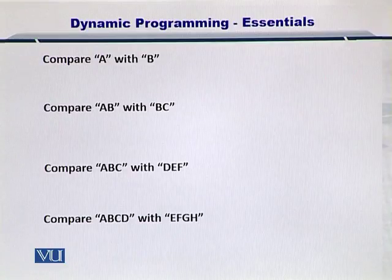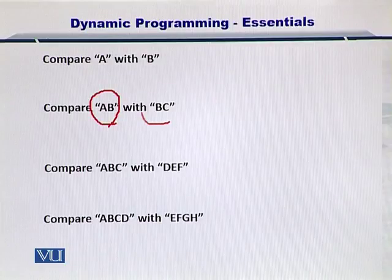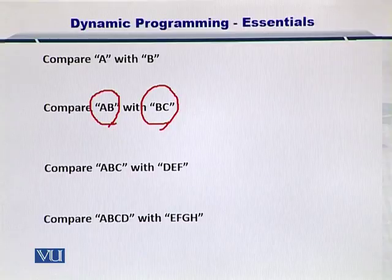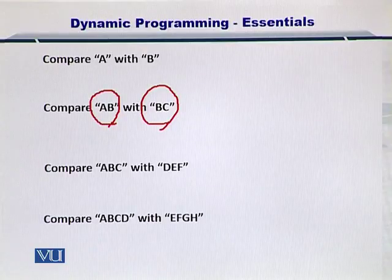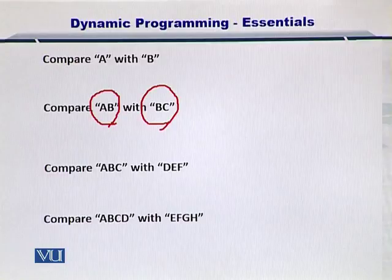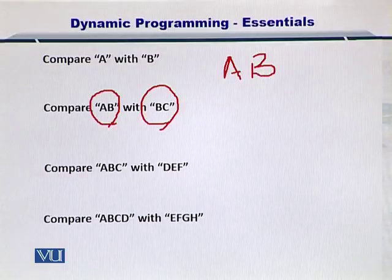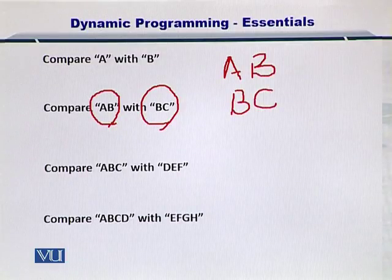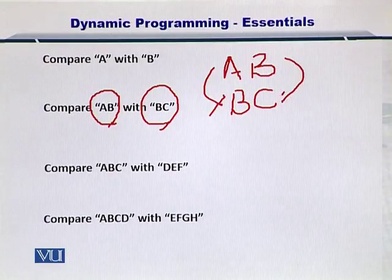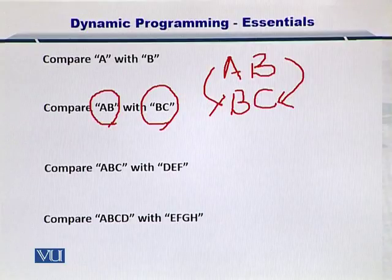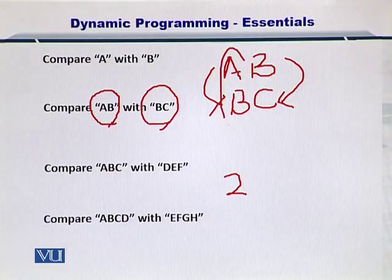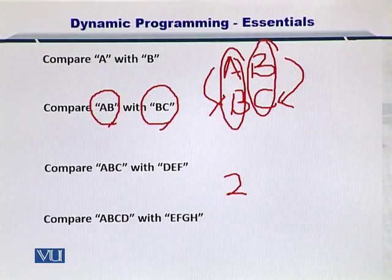Let's consider another case where the first string has been extended to include two characters, while the second string also includes two characters. Let's see which combinations will be formed and how many operations you need to compare these two strings. First, you write the two strings. Obviously, A does not match with B, and B does not match with C. How many operations have you performed? Two comparisons.